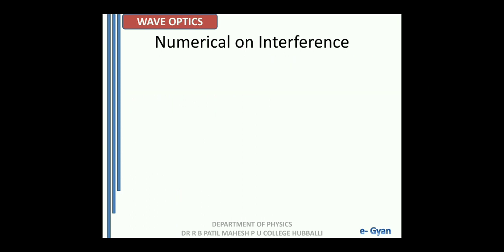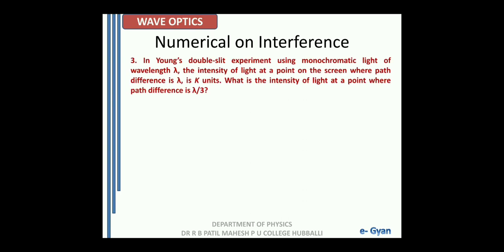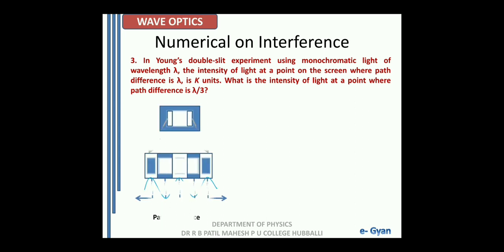Let us go to the next numerical on interference. In Young's double slit experiment using monochromatic light of wavelength lambda, the intensity of light at a point on the screen where path difference is lambda is k units. What is the intensity of light at a point where path difference is lambda by 3? We have an interference pattern on the screen. At central maximum where path difference is 0, we have maximum intensity. At lambda by 2, we have zero intensity. At lambda, we have maximum intensity again.